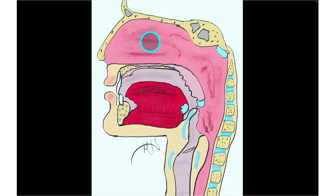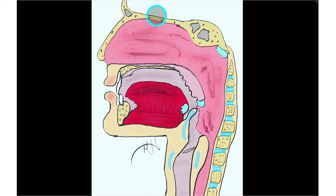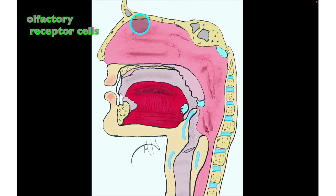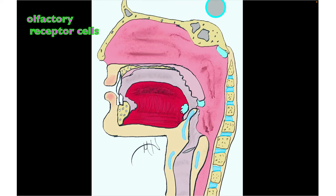Looking at the nasal cavity, this would be the floor of the ethmoid bone. The base of the ethmoid bone is the cribriform plate, which is peppered with tiny perforations. Through those holes, olfactory receptor cells drop down into the roof of the nasal cavity in a region known as the olfactory epithelium. Those olfactory receptor cells detect odorant molecules, send the signal up into the brain, and that's how we perceive smell.